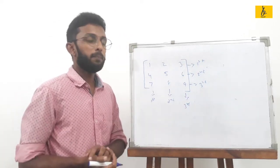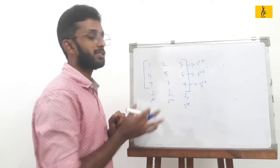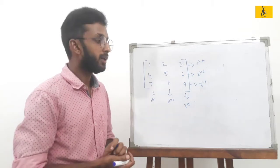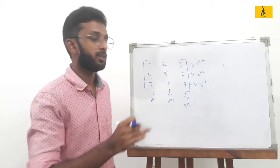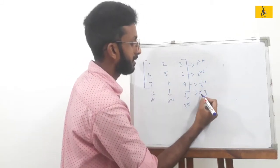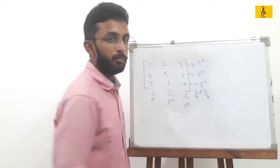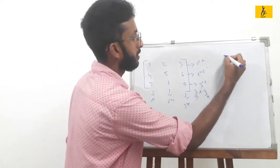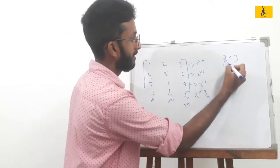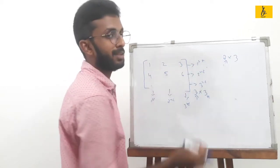Now, what we call the order. This row is sometimes written as 1 by 3, by 3. We call it 3 by 3. If the number of rows equals 3 and columns equals 3, we call it a 3 by 3 matrix. A 2 by 3 matrix has 2 rows and 3 columns.